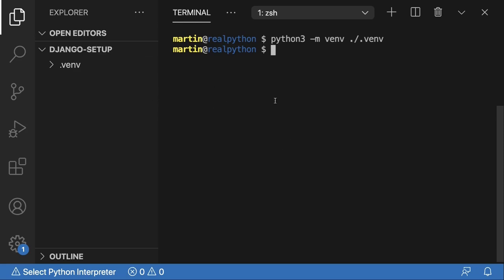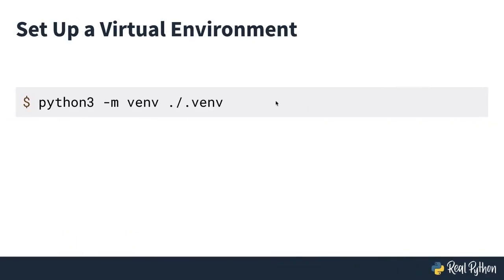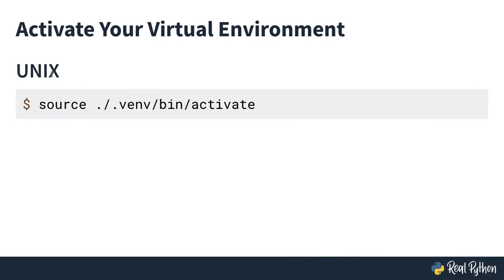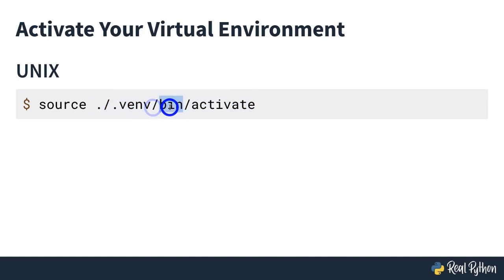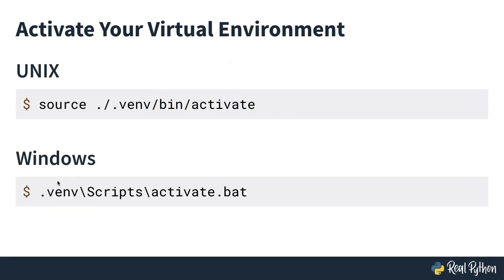Creating the virtual environment doesn't mean you should start installing Django right away, because first you need to also activate it. The command for activation on a Unix system is `source` followed by the path to the activate script — that's inside the virtual environment folder, then the `bin` folder, then the `activate` script. On Windows it's a little different: you give the path to your virtual environment, then into a `Scripts` folder, and there's a file called `activate.bat` that you execute instead.